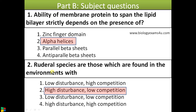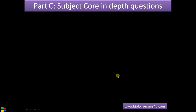Never attempt a question that doesn't even give you a 50/50 chance. For example, if you're familiar with plasma membrane, you'd know it's either alpha helices or parallel beta sheets — that's a 50/50 chance. But my request is: never attempt questions if you don't know the exact answer. Now moving into Part C — these are core, in-depth subject questions. You need to answer only 25 out of 75.